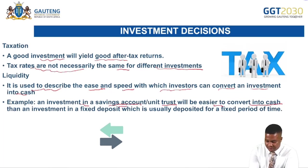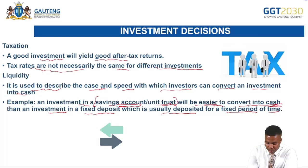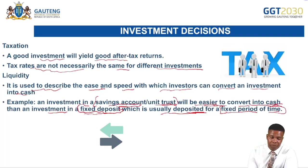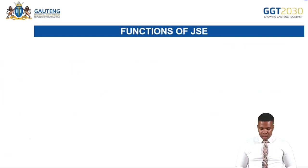An investment in a savings account or unit trust will be easier to convert into cash than a fixed deposit, which is deposited for a fixed period of time. It means you can get your money from a savings account or unit trust more easily than from a fixed deposit. That is what liquidity means — how easy it is to take your money from an investment and put it into a personal bank account. Consider this before making any investment decision.